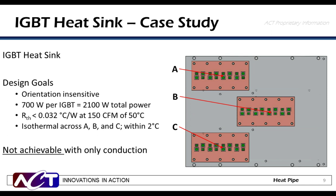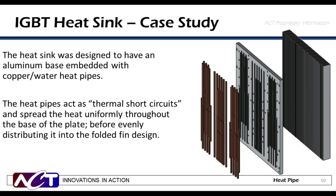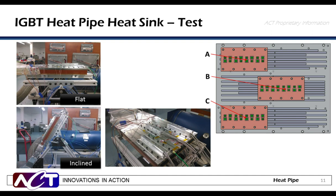Doing some basic analysis, you'll find that this is not achievable with conduction alone. That's where we look to a heat pipe embedded heat sink. This heat sink is designed with an aluminum base with embedded copper-water heat pipes. The heat pipes act as thermal short circuits, spreading heat uniformly throughout the base before it's spread into the folded fin design on the other side and dissipated to air. The grooves have been milled out, heat pipes embedded, and solder filled over top to ensure a smooth mounting surface for the IGBTs.